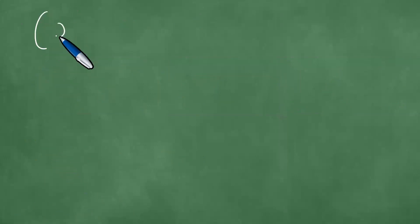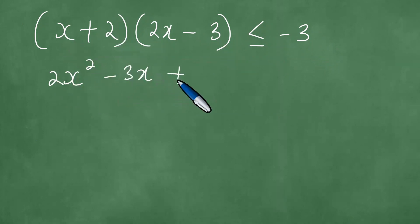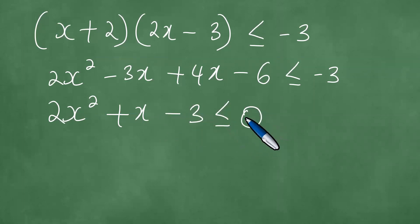We're given (x+2)(2x-3) ≤ -3. Multiply x by 2x to get 2x². x by -3 gives -3x, plus 2 by 2x gives 4x, and 2 by -3 gives -6, so we have 2x² - 3x + 4x - 6 ≤ -3. This simplifies to 2x² + x - 3 ≤ 0.